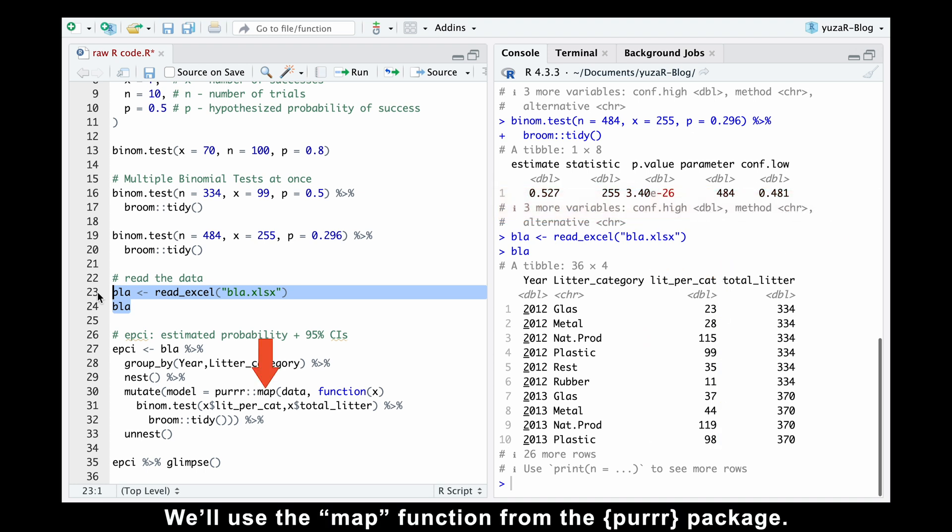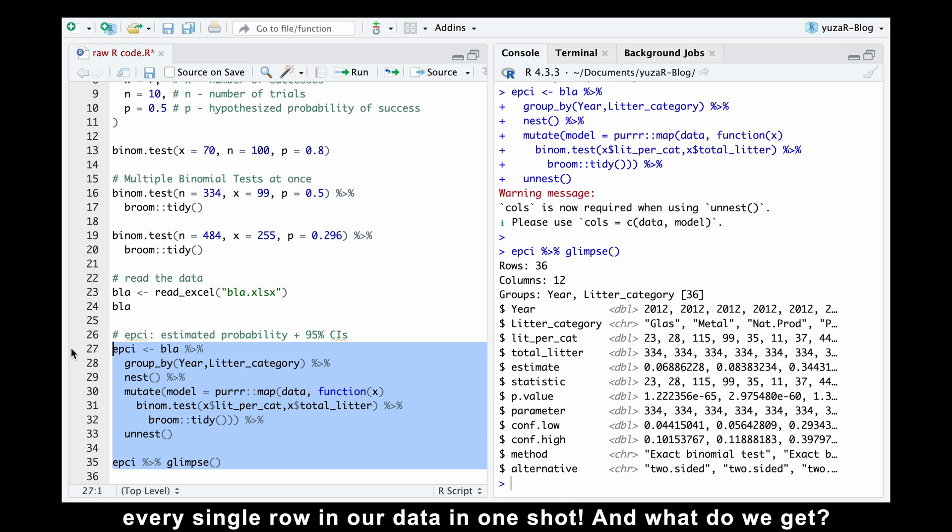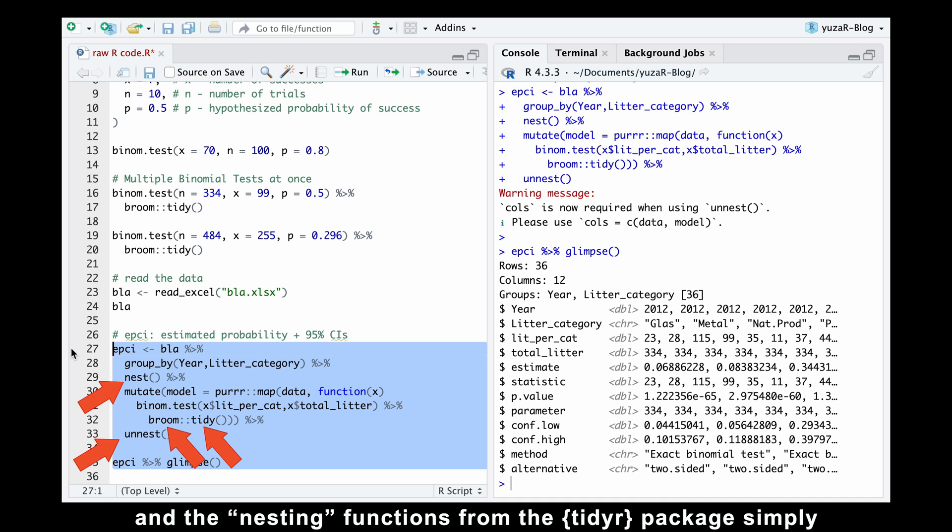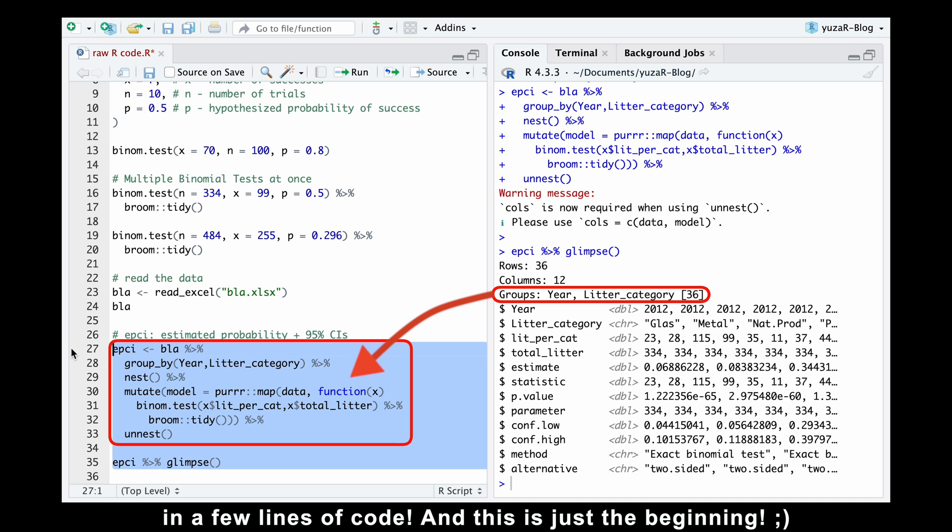We'll use the map function from the purrr package. This powerhouse function lets us apply the binomial test to every single row in our data in one shot. And what do we get? Well, we estimate the probability of encountering a particular litter category, along with confidence intervals and p-values. All wrapped up in a neat little table. Now, the tidy function from the broom package and the unnesting functions from the tidyr package simply put all the results in a tidy table. But they are not important right now. The key takeaway is that we just ran 36 binomial tests in a few lines of code. And this is just the beginning.